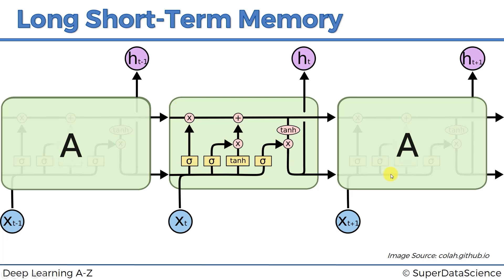If you're going to take away one thing from today's tutorial, this is it: LSTMs have a memory cell — I call it a memory pipeline — which flows through time very freely. Sometimes memory might be removed or erased; sometimes things might be added into it. But otherwise it flows freely through time. Therefore, when you back-propagate through LSTMs, you don't have the vanishing gradient problem. That's the essence of LSTMs.